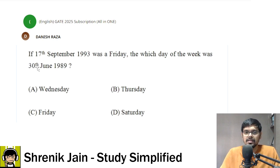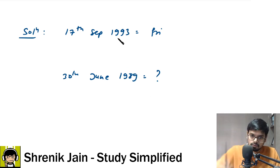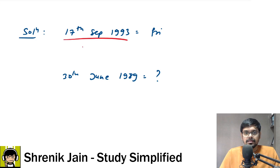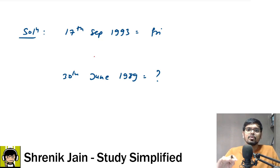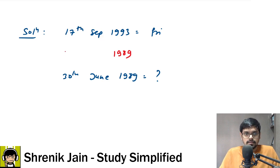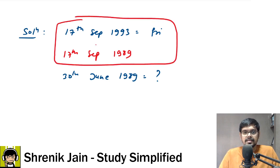The first step: 17th September 1993 is a Friday and we have to find 30th June 1989, so we go backward from 1993 to 1989. I will break the question into two parts — one part using the trick and the other using the standard approach. To use the trick, I need to enter the 1989 year while keeping the number and month the same, which puts it in the correct format for applying the trick.